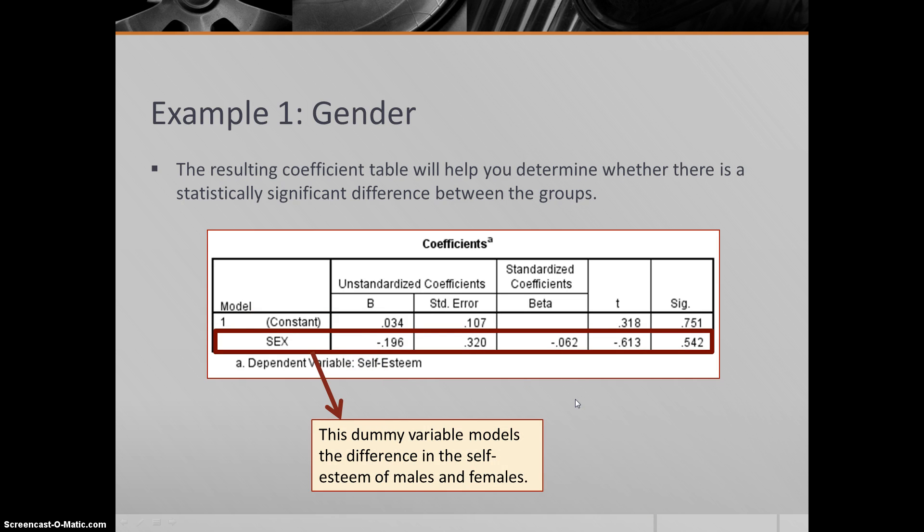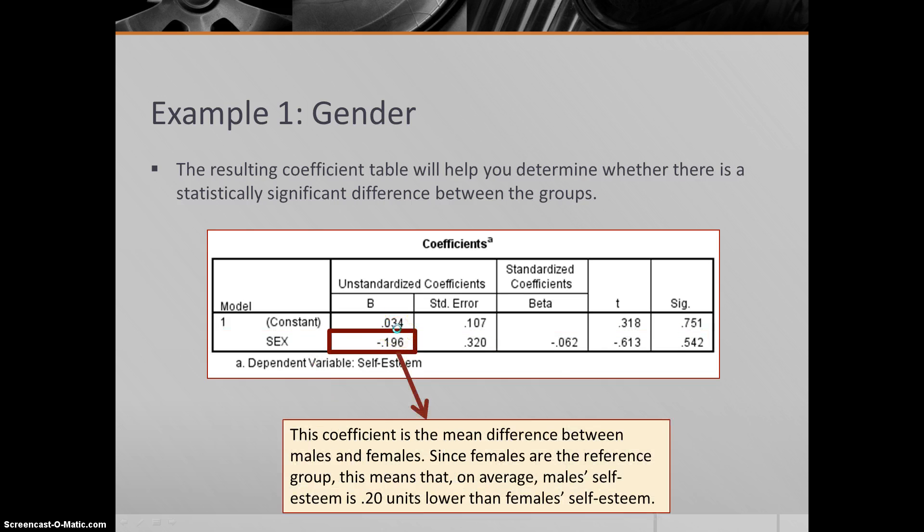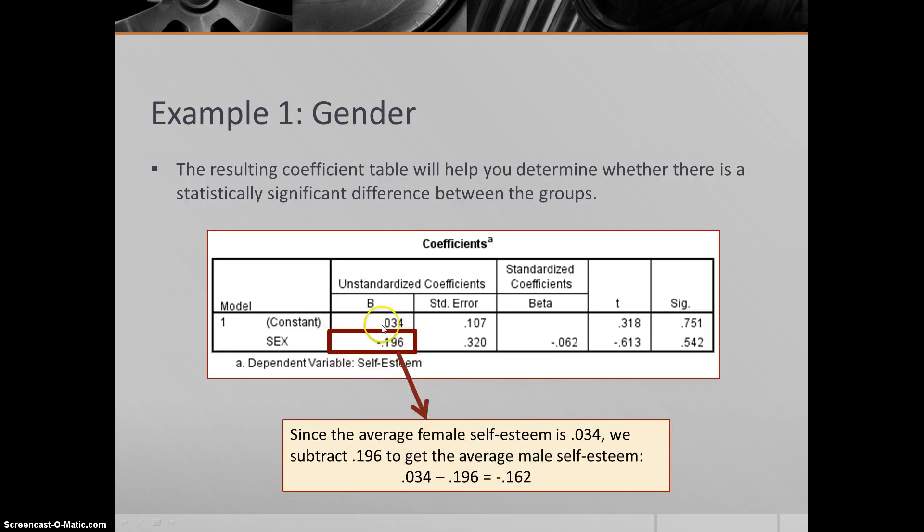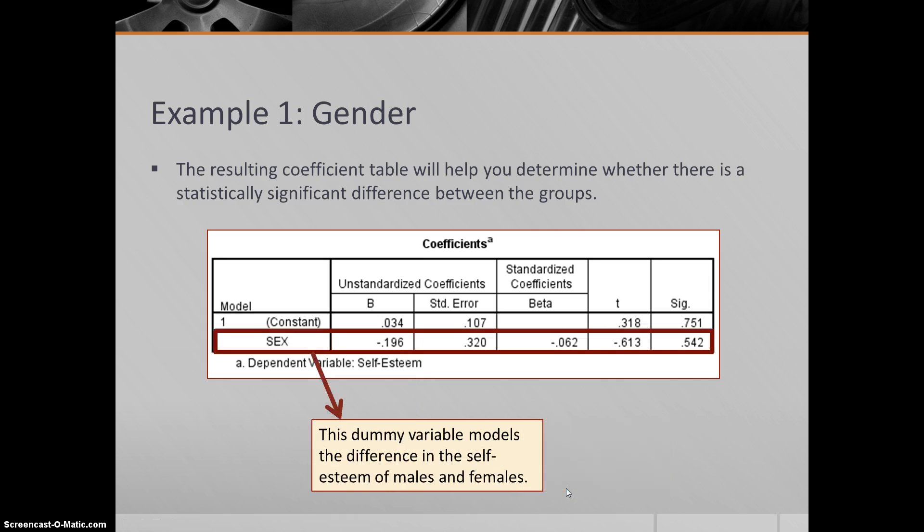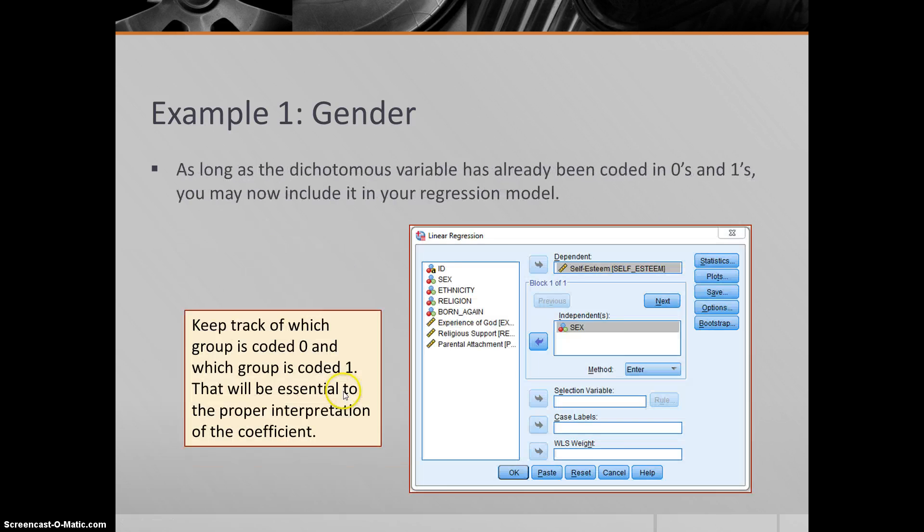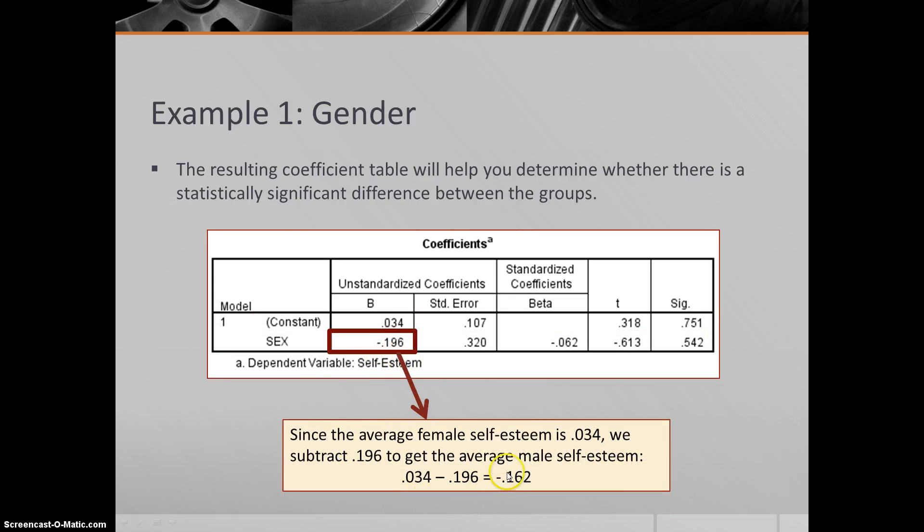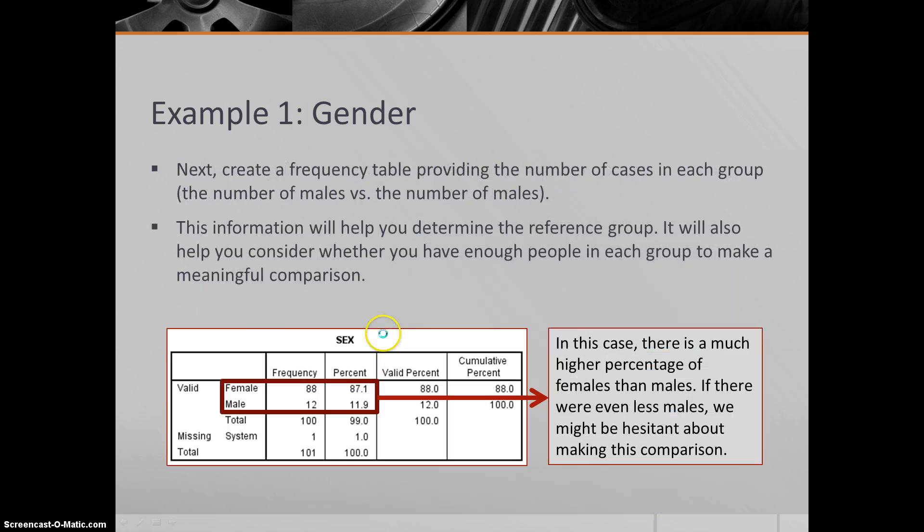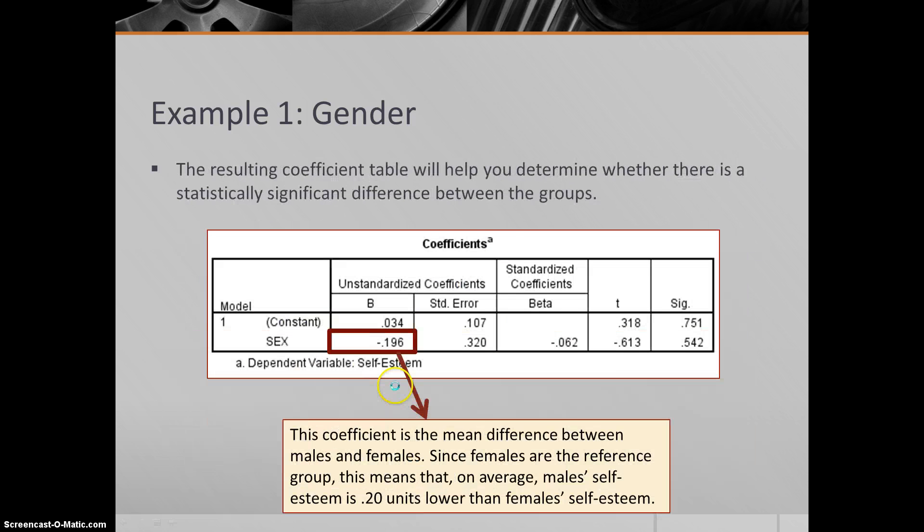This dummy variable models the difference in self-esteem of males and females. Since males are one, this is the change in y associated with being male. It shows us that it's about 0.2 units lower than females. You would take the female average, 0.03, subtract the difference, 0.196, and that would give you the male average of negative 0.162. Again, this should match up with what we saw earlier, right here. The male average, negative 0.162, those are what we came up with here. Females, 0.03, and females, 0.03. These should match up.